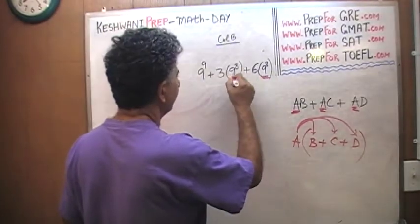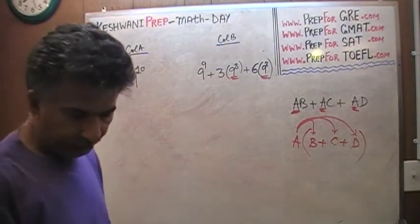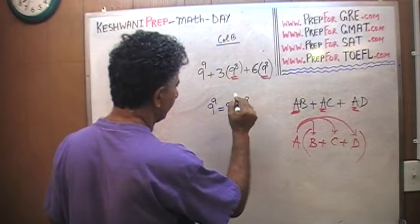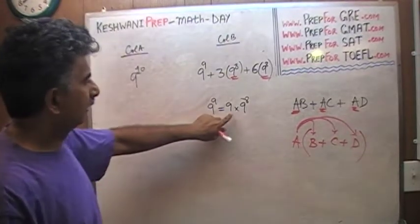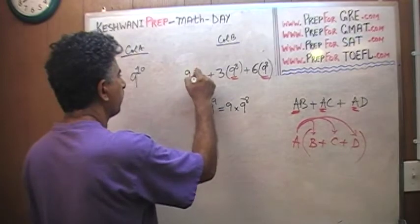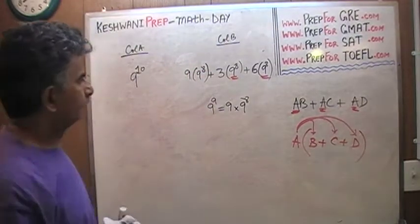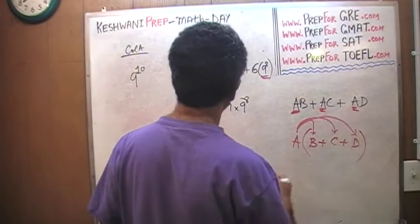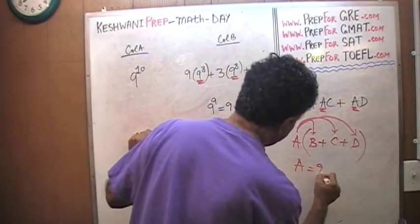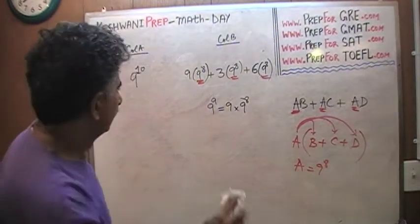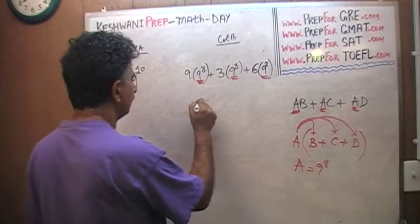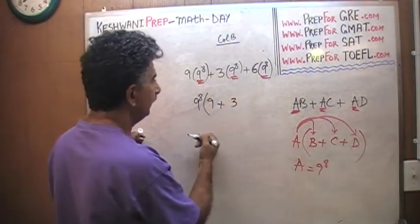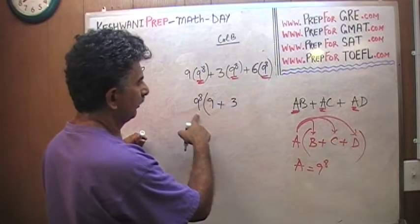I see 9 raised to 8 in the second and third terms, but not in the first term. However, 9 raised to 9 can be written as 9 times 9 raised to 8. So we replace 9 raised to 9 with 9 times 9 raised to 8. Now 9 raised to 8 is our common factor — our a equals 9 raised to 8. Taking it out: from the first term we get 9, from the second term we get 3, and from the third term we get 6.